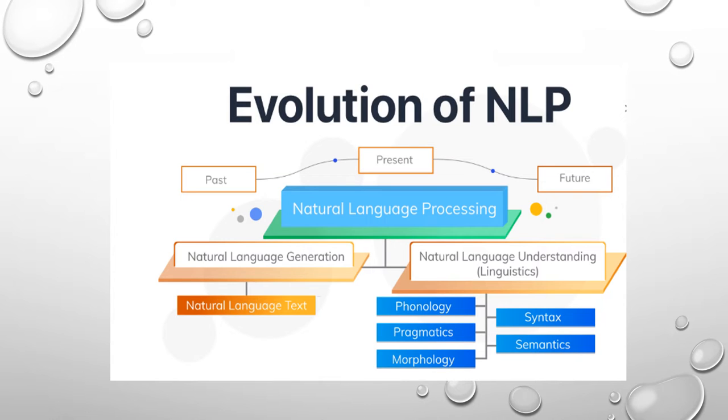Now we are going to discuss about evaluation of NLP, the past, the present and the future. The natural language processing have two main aspects. Each aspect have different levels and this evaluation of NLP will further be explained by one of my friend, Kishore Tamma.